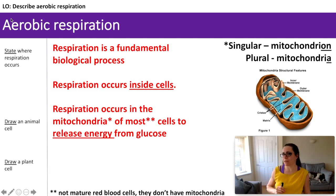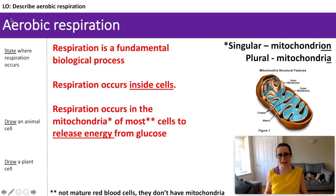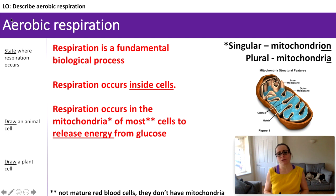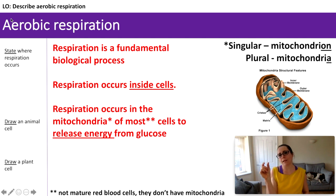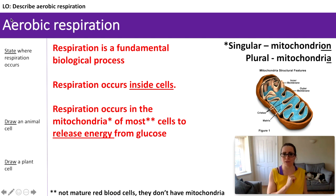Respiration, like photosynthesis, occurs inside your cells — not every single cell in your body, but inside most cells. It also occurs inside plant cells as well. Most living cells will have mitochondria inside. Mitochondria is where respiration occurs — they are fabulous little subcellular organelles responsible for splitting those glucose molecules and releasing that energy. Mitochondria is the plural; one mitochondrion.